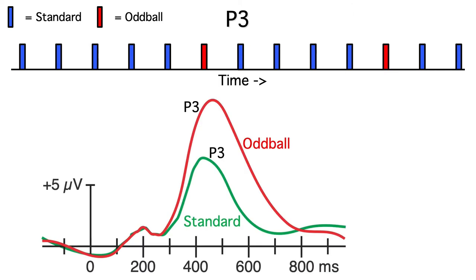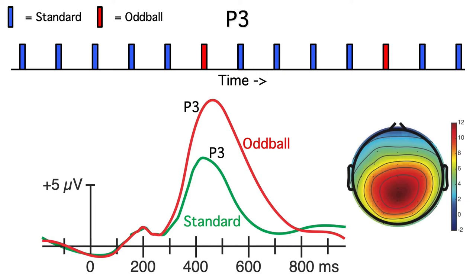In paradigms like this, the oddball generates a much larger P3 than the standard. The P3 is largest near the PZ electrode site, but it can be seen at virtually every electrode site on the top half of the head.